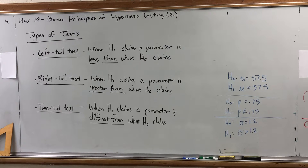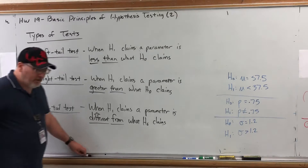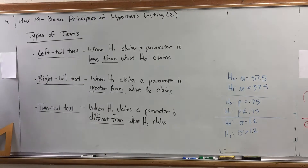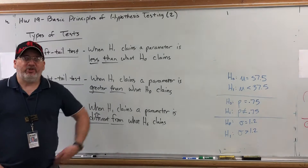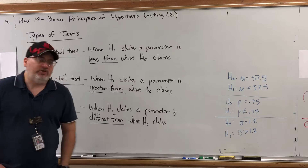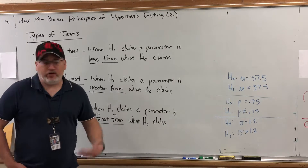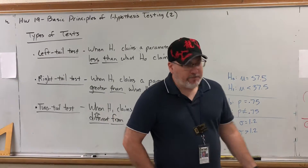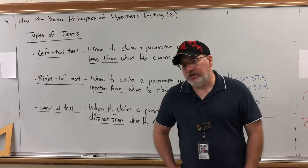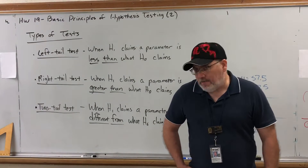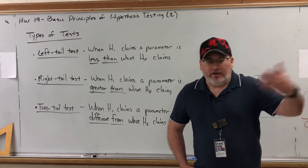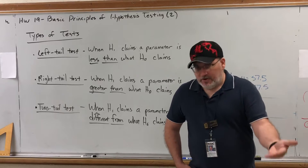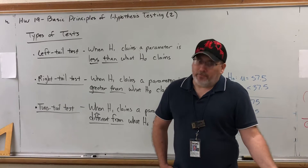Homework 19: basic principles of hypothesis testing, video 2 - types of tests. In the previous video we introduced what a hypothesis was and the two types: the null hypothesis, which is the claim that a population parameter is equal to a value, and the alternative hypothesis, which contradicts the null by saying the parameter is greater than, less than, or not equal to what the null claims.